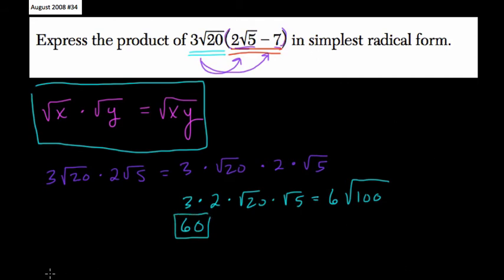In the second part, we have 3 square root of 20 times negative 7, or subtracting 7. Here we get negative 21 times the square root of 20. So here, what we have ultimately is 60 minus 21 radical 20.